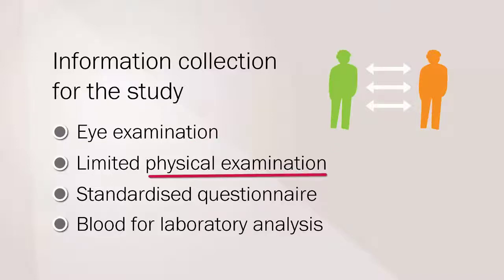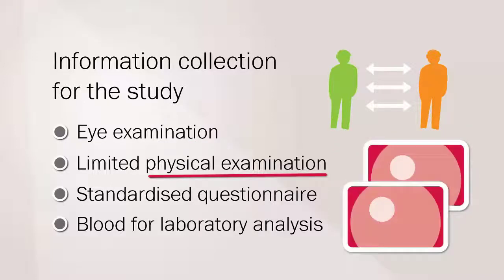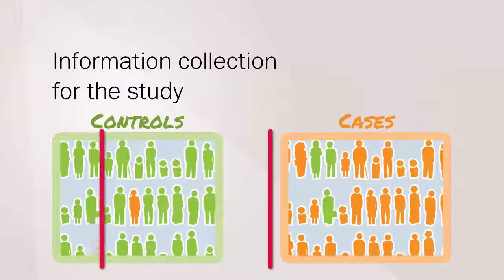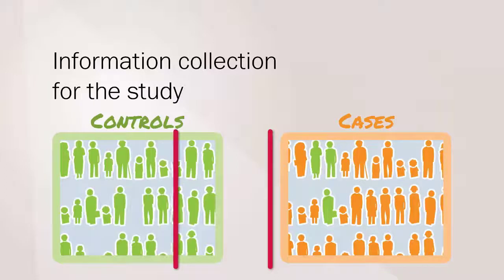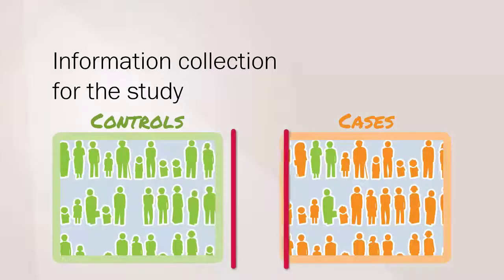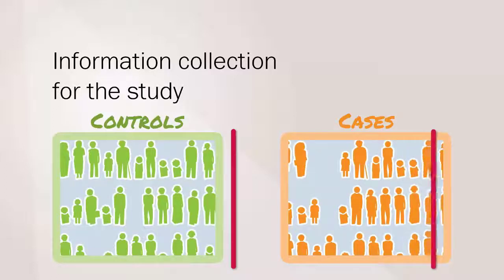Retinal photographs were taken of both eyes in both cases and controls, and a subset of the cases and all the controls were reviewed at a central venue for quality assurance. It is very important to ensure that there are no individuals with disease amongst the controls or disease free individuals amongst the cases. If this does happen, it will affect the strength of any association seen between the disease and the exposure.